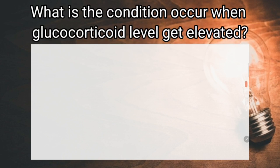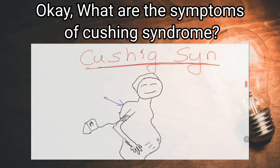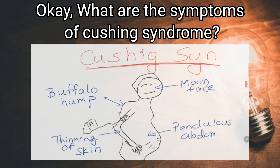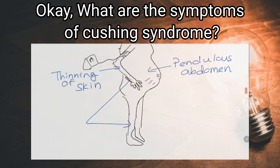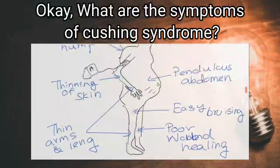What is the condition that occurs when glucocorticoid levels get elevated? Cushing syndrome. What are the symptoms of Cushing syndrome? Moon face with red cheeks, thin arms and legs, thinning of skin, buffalo hump, pendulous abdomen, poor wound healing, and easy bruising.